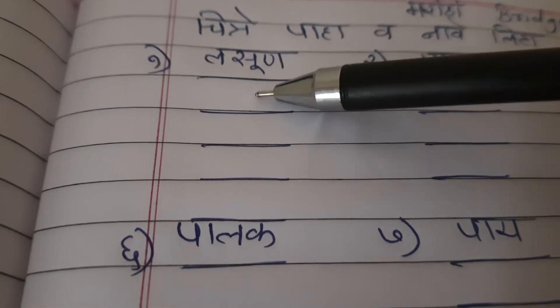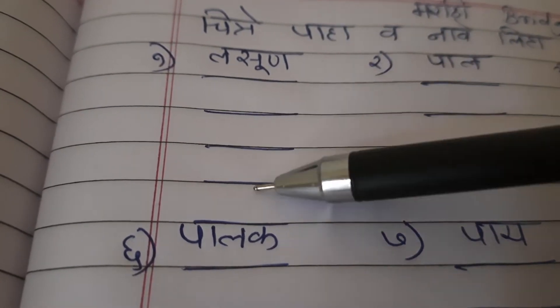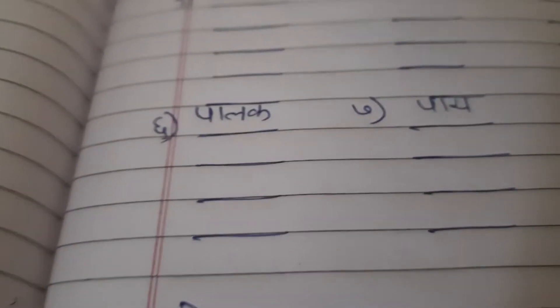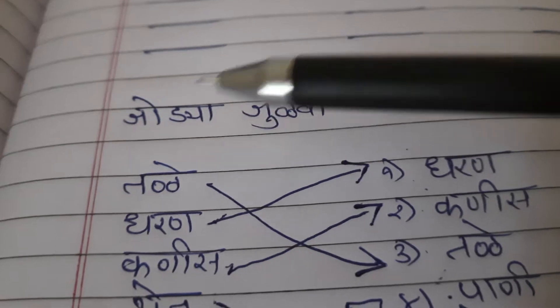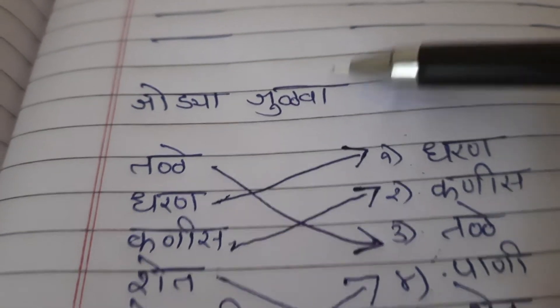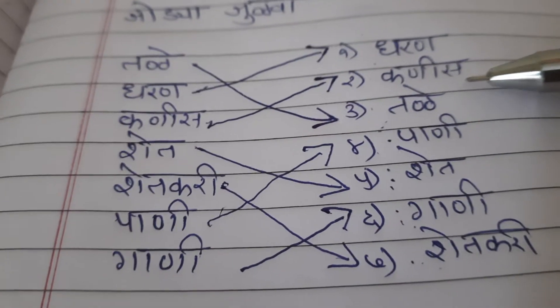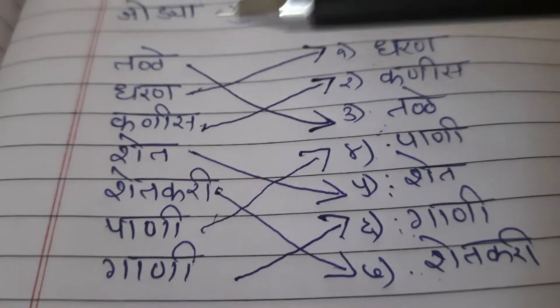These words we have done three times, and three times we are going to write these words. Now Zoda Zorba — we have done this already.